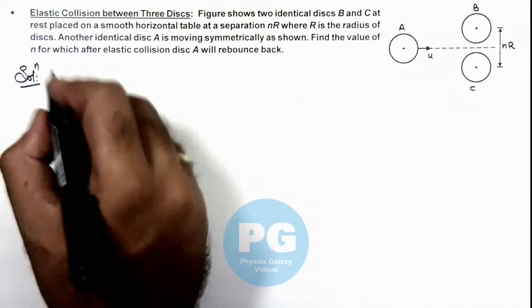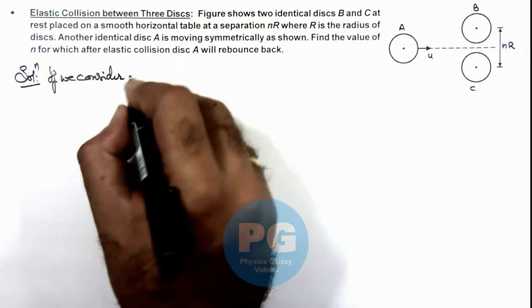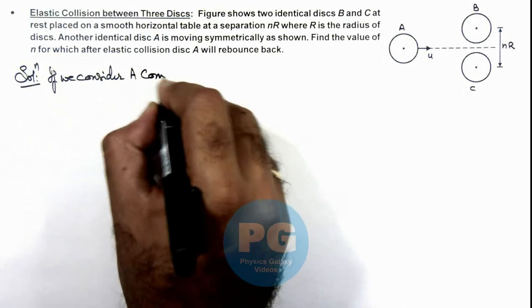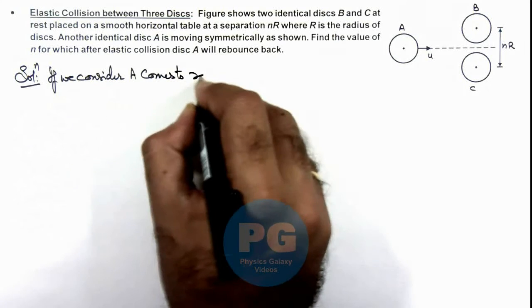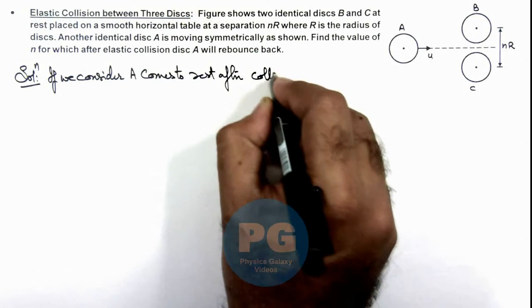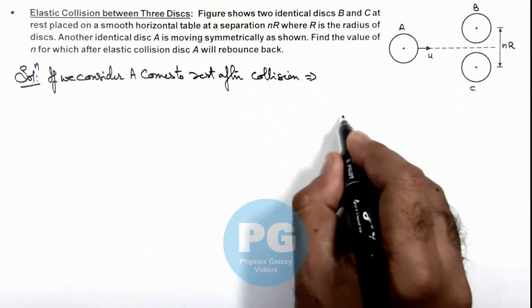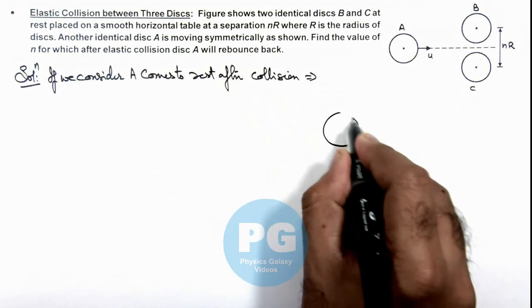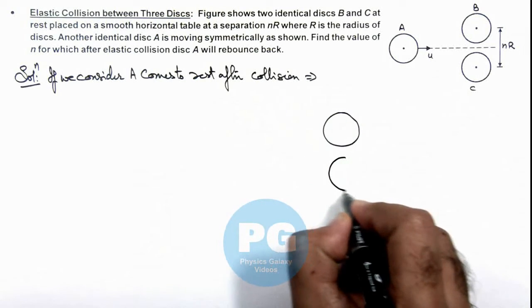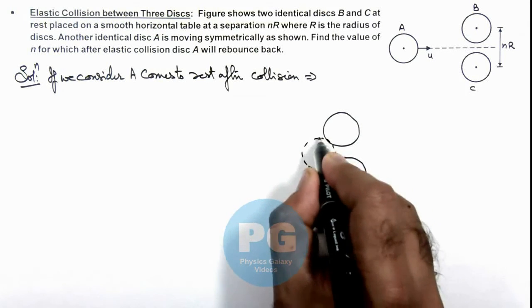If we consider A comes to rest after collision, this implies the situation would be like this. These are the two discs B and C on which when A will strike at this position.